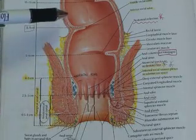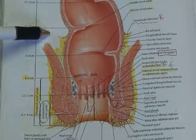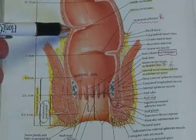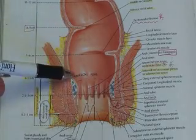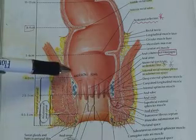Some important landmarks include the middle rectal valve, which is at the level usually of the peritoneal reflection. And as you move more distally, you find the anal canal proper.